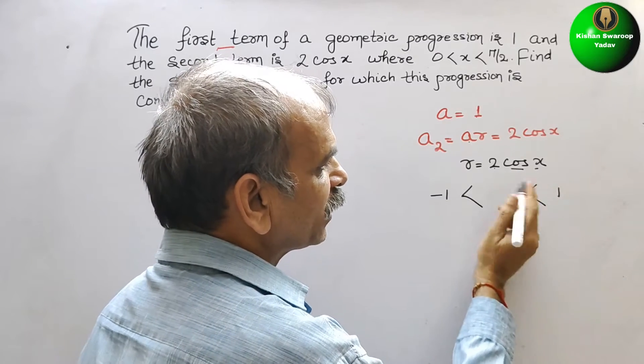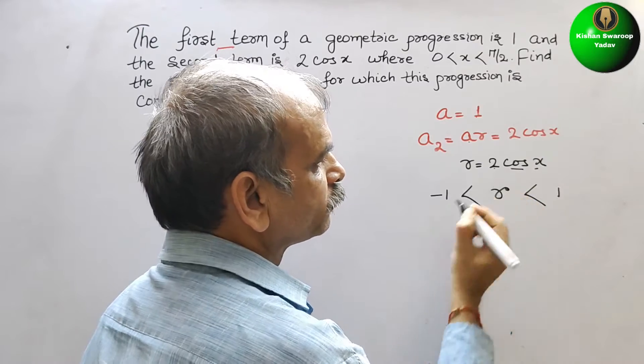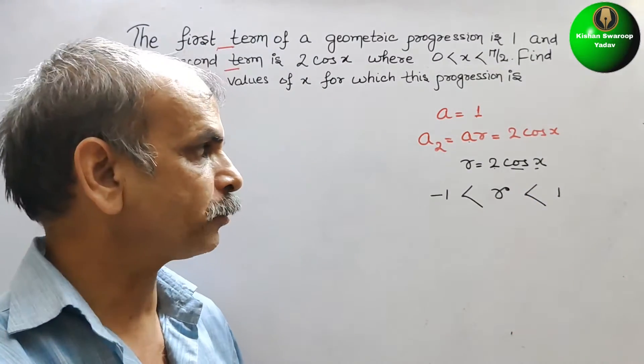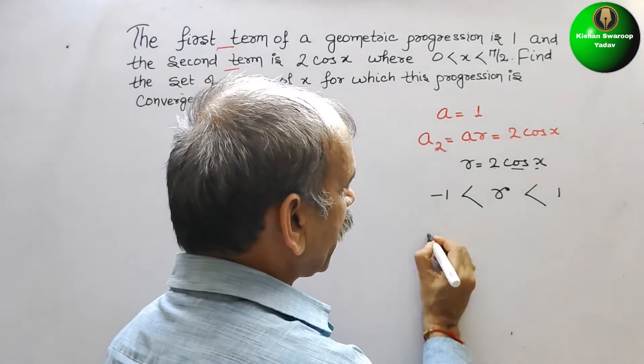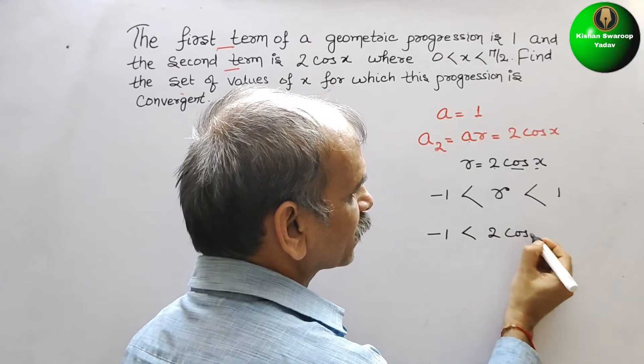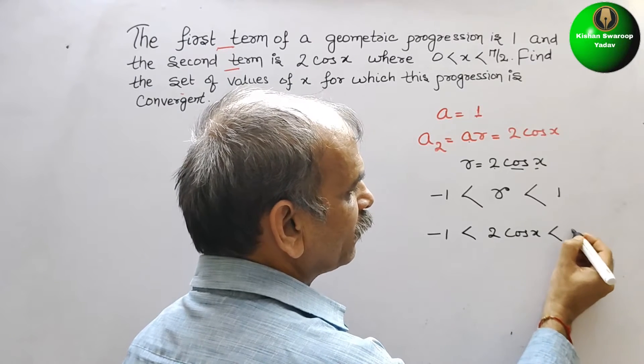Or you can say, this is nothing but your r. Now, substitute the value of r. So, it will be minus 1 less than 2 cos x less than 1.